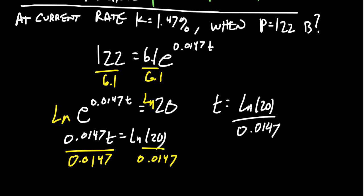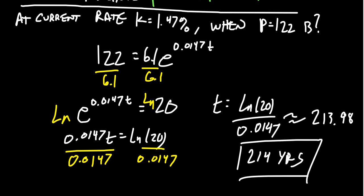Now, this number we're going to throw into our calculator, and we're going to get 213.98. So I'm going to round that to the nearest year. And I'm going to say that approximately 214 years from the current start date is going to be when the population of Sol 3 reaches approximately 122 billion individuals.